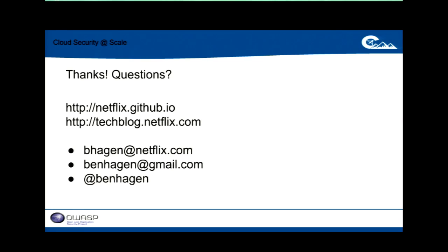On programming languages: for the security tools I mentioned, most are written in Python. Scumbler is written in Rails. Throughout the corporation that freedom concept comes into play — most people write their applications in Java, but people write in every language you can imagine: Go, Clojure, Java, Python. The security team prefers Python.